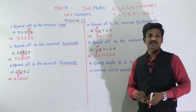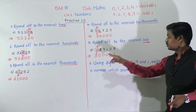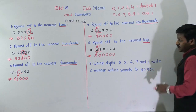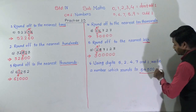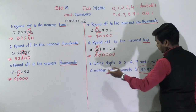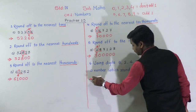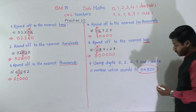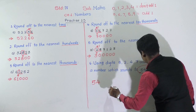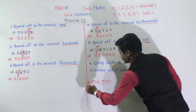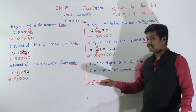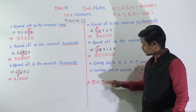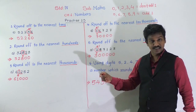Now let's see Question 6 — a HOTS (Higher Order Thinking) question. Using digits 5, 2, 4, 7, and 1, write a number which rounds to 54,300. They have given us the number after rounding off, and we need to find the original number using these digits. Looking at 54,300, it has two zeros at the end — that means this number has been rounded to the nearest hundred.